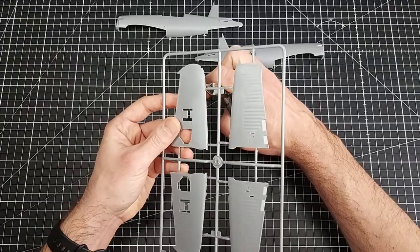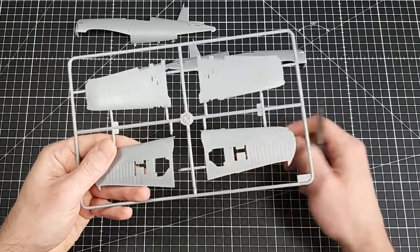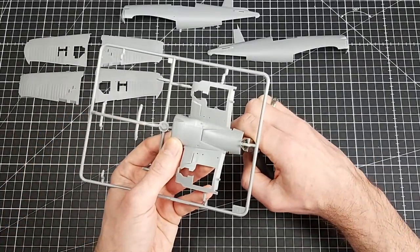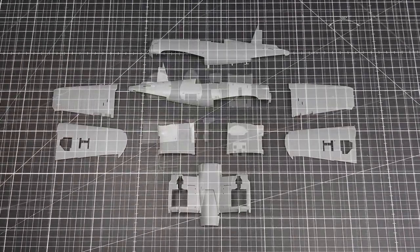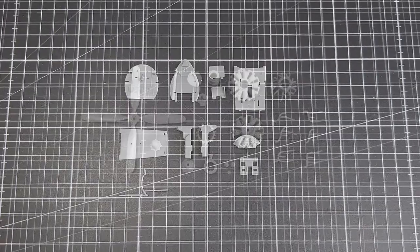If you want to build a later version, Hobby Boss is a good alternative. Hobby Boss offers almost every version of the Corsair for an affordable price. I chose a Korean War Era F4U-5 with US Navy markings.